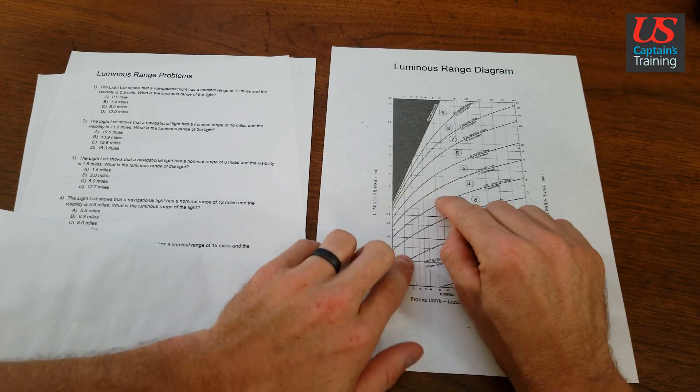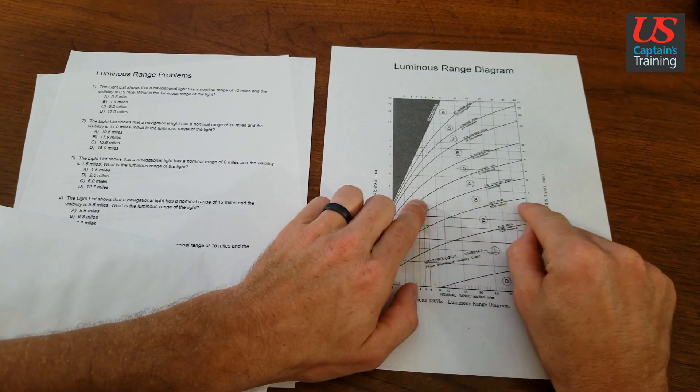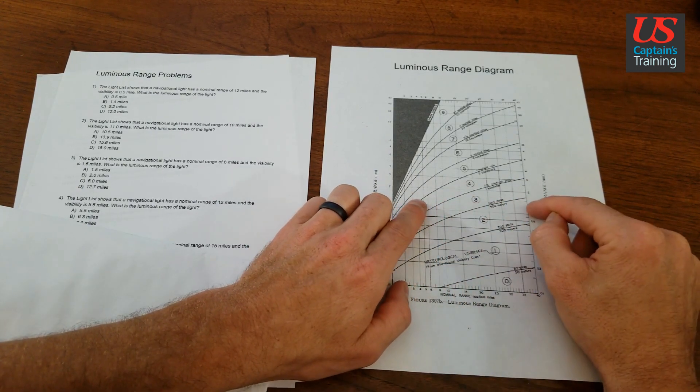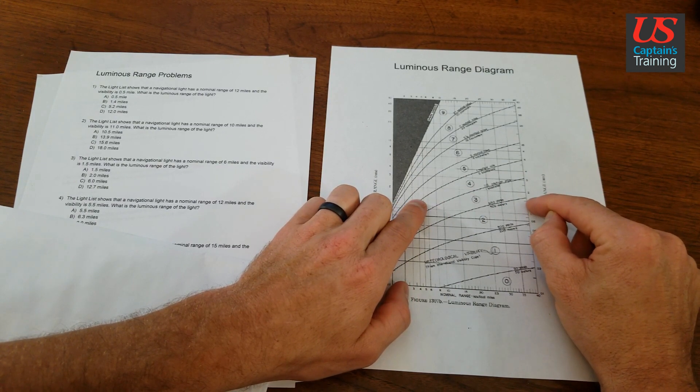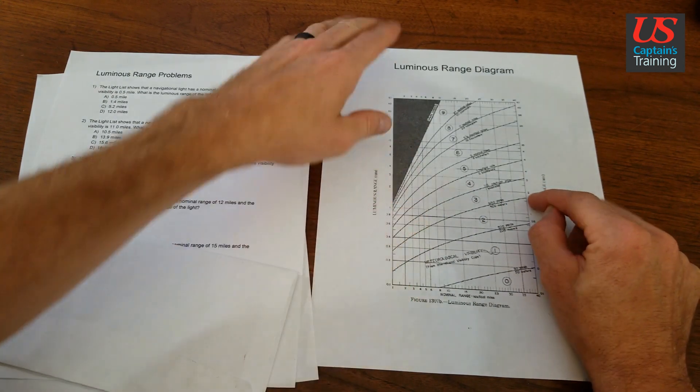And then once you hit that curve, follow it over. So we're saying like 1.3 or 1.4. See this half tick right there? You'll notice that that tick mark is not halfway between 1 and 2 right here.